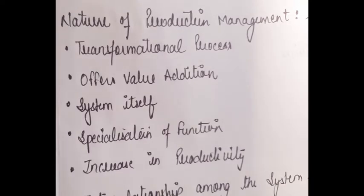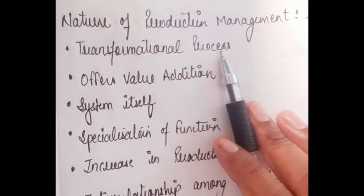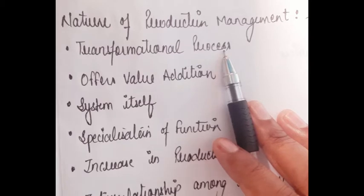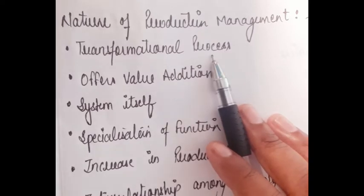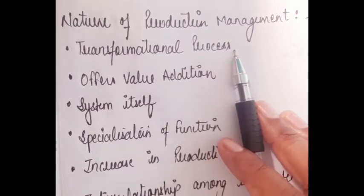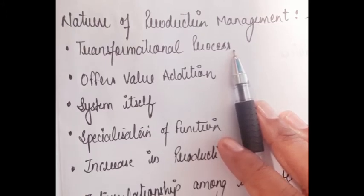The first nature is the transformational process. As you all know, production is basically the conversion of raw material into finished goods. This is your transformational process, because the transformation of raw material into finished goods is the main task of production management. So the main feature of production management is that it is a transformational process which transforms raw material into finished goods.